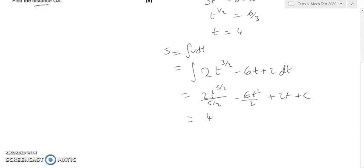And so that gives us 4/5 t to the 5/2 minus 3t squared plus 2t plus c, and that's S.